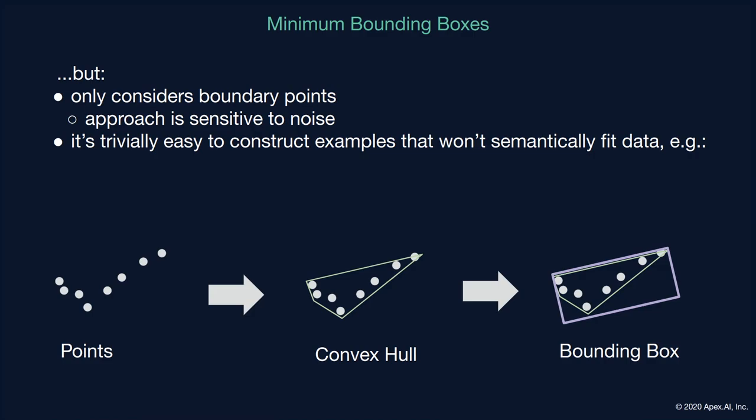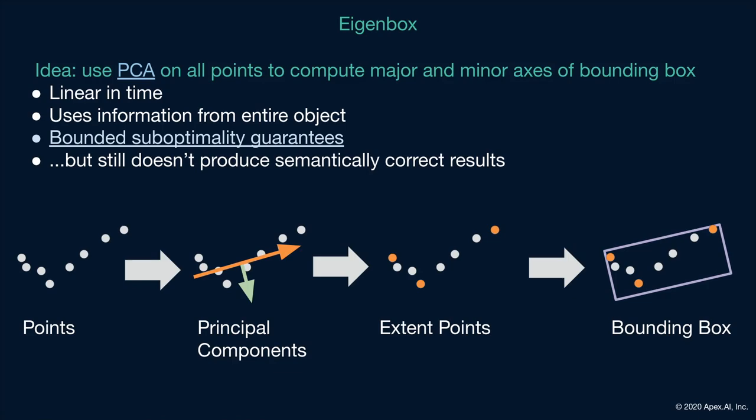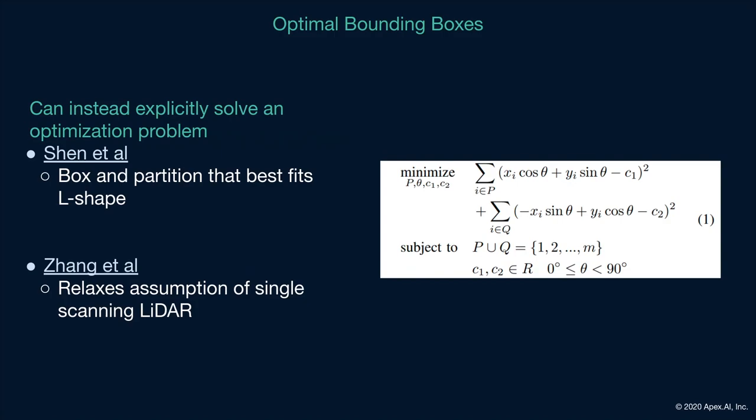The next obvious approach is to use principal component analysis to compute the major and minor axes of the bounding box, then fit a bounding box matching these axes. This approach is linear in time, uses information from the entire object, and is bounded in its suboptimality. Unfortunately, this approach still doesn't give us the result we want. Returning to the L-shaped example, often the major principal component fits diagonally along the box, giving again a skewed bounding box.